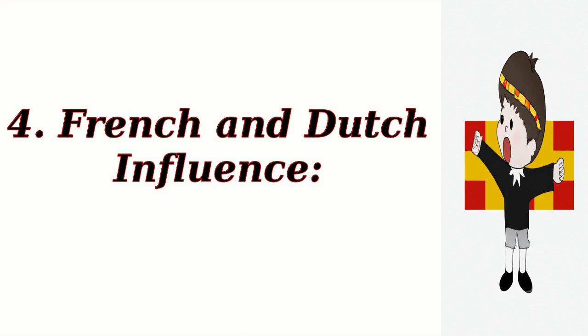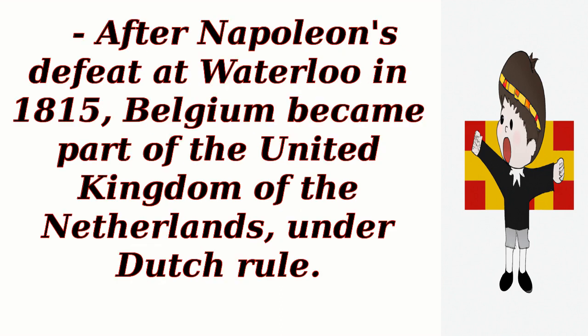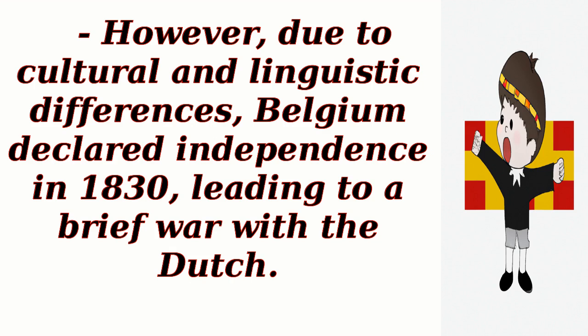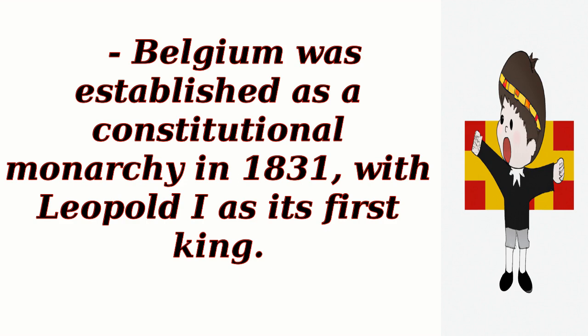French and Dutch Influence. In 1794, the French Revolutionary Army invaded Belgium, leading to the annexation of the region by France. After Napoleon's defeat at Waterloo in 1815, Belgium became part of the United Kingdom of the Netherlands. Belgium was established as a constitutional monarchy in 1831, with Leopold I as its first king.